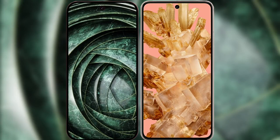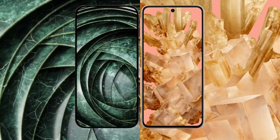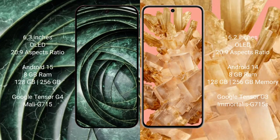I will compare the new Google Pixel 9a with Google Pixel 8. Google Pixel 9a has a 6.3-inch OLED display with an aspect ratio of 22:9. Google Pixel 8 has a 6.2-inch OLED display with an aspect ratio of 22:9.